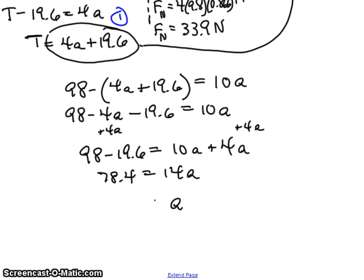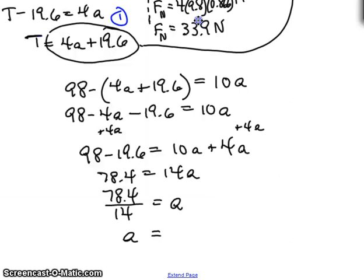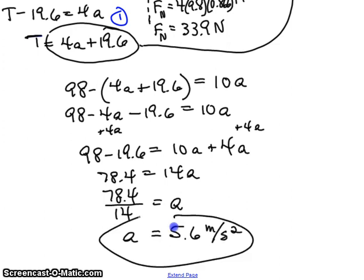We'll now have a equals 78.4 over 14. Or a finally equals 78.4 divided by 14 is 5.6. 5.6. Acceleration is measured in meters per second squared. So that's a practical example of an incline problem.